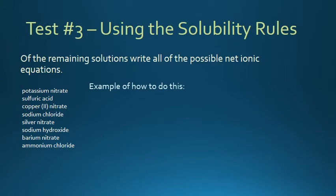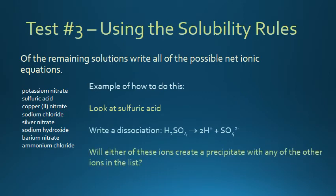Let's take a look now at sulfuric acid. Let's write the dissociation reaction for sulfuric acid. Now, ask yourself, will either of these ions create a precipitate with any of the other ions in the list? So, take a look at your solubility rules, find sulfate, and who does sulfate precipitate with?